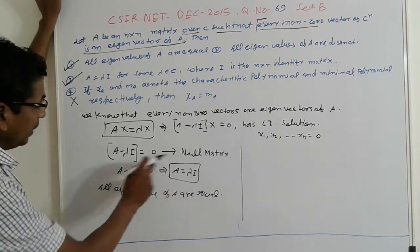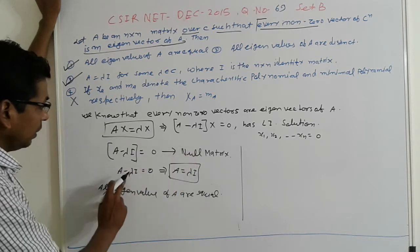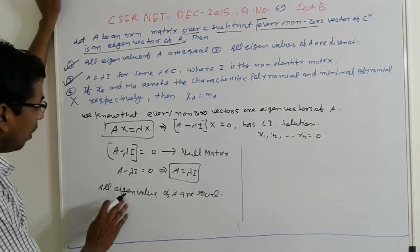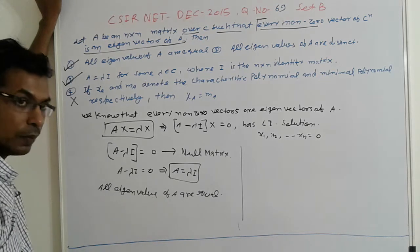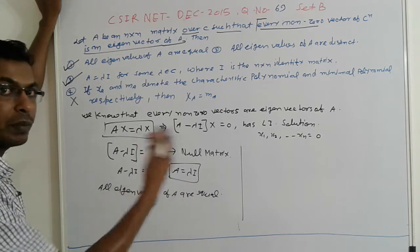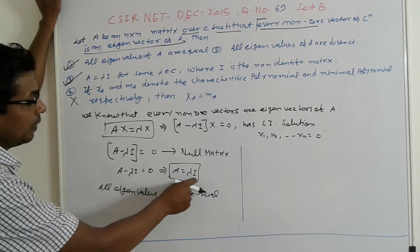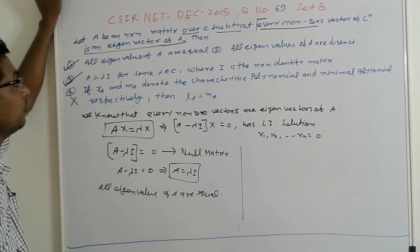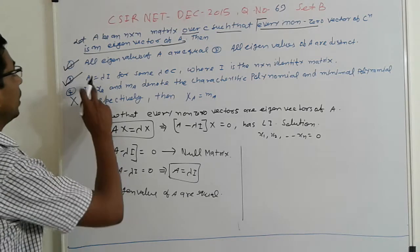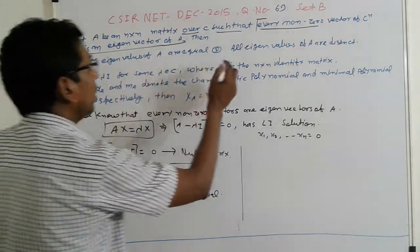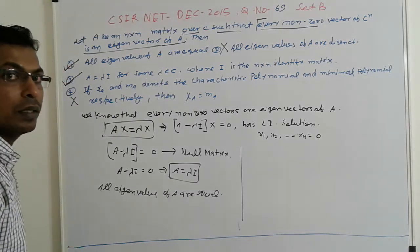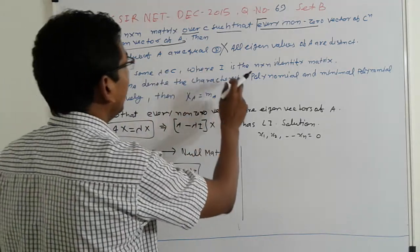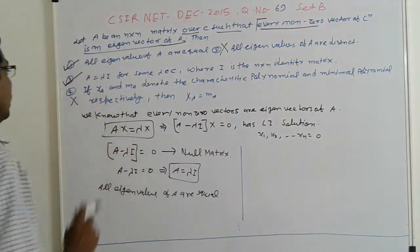So we can say A equals λI, meaning all eigenvalues of A are equal to λ. A is a scalar multiple of the identity matrix. Therefore, the first option — all eigenvalues of A are equal — is correct. The second option — all eigenvalues are distinct — is wrong. The third option, A minus λI = 0 for some λ, where I is the n×n identity matrix, is also correct.